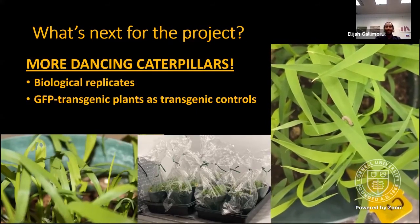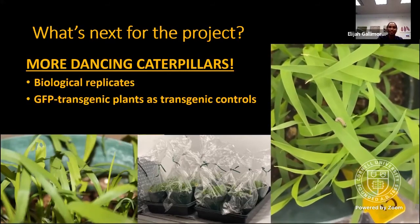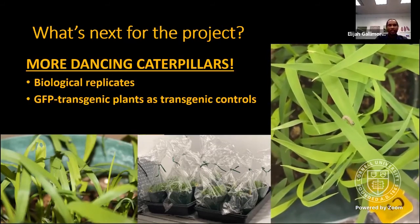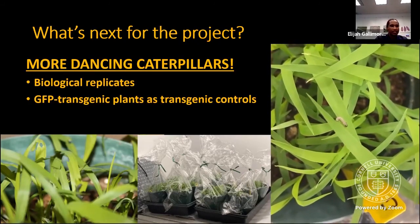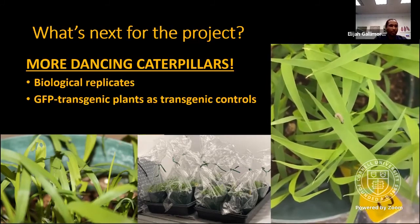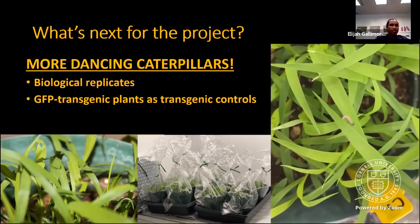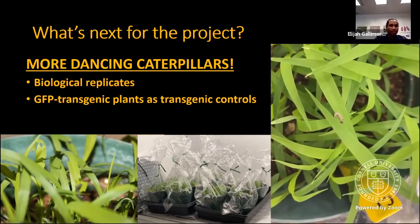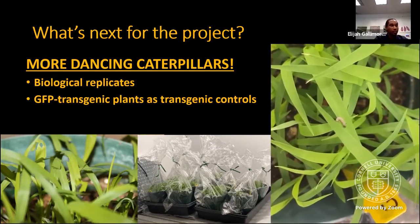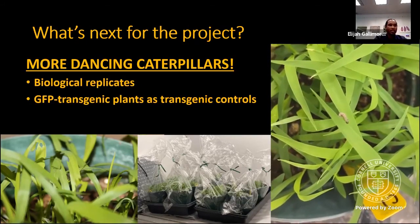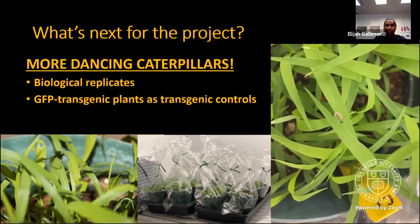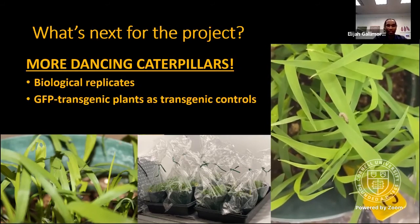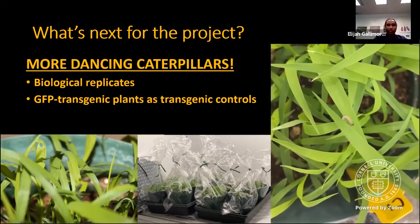So what's next for the project? More bioassays — so far we've only conducted pre-experimental bioassays with small sample sizes for Setaria lines and fall armyworms. During the fall semester, I'll be conducting herbivory bioassays with more caterpillars and biological replicates for the respective Setaria lines. I will also include GFP transgenic plants as a transgenic control alongside the wild type control, to ensure that we show it's not any arbitrary transgenic insertion which confers insect herbivory resistance.